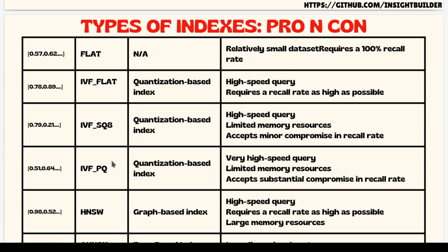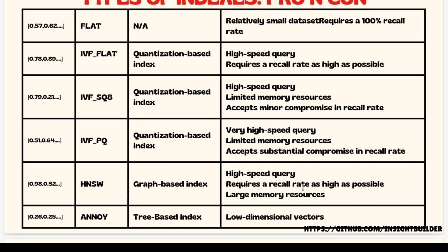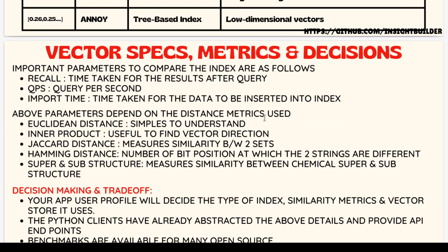Here is a tabular comparison showing the pros and cons of each index. HNSW has high-speed queries, better recall rate, and uses larger memory resources — that is its con: you need larger RAM for HNSW. But RAM is generally not a challenge. If it is, you can try IVF PQ — product quantization — which most vector stores now support.